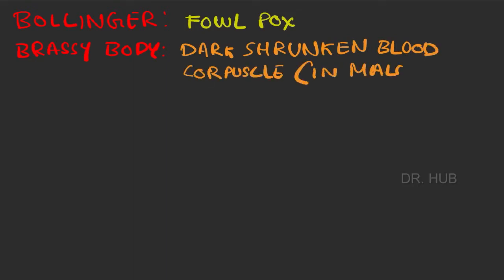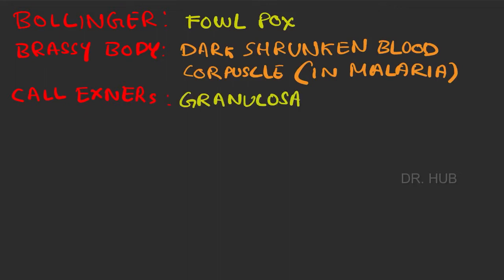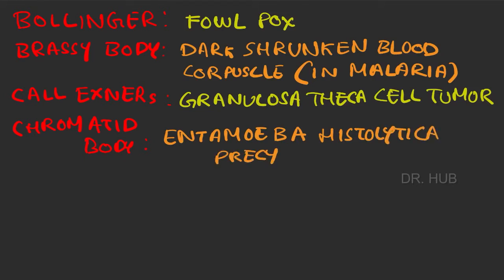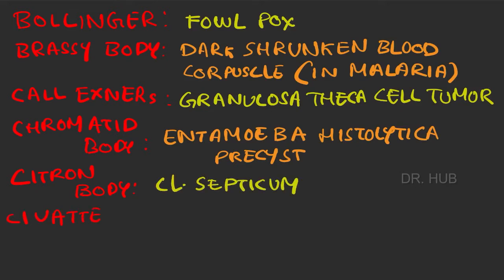Brazi bodies seen in dark shrunken blood corpuscles, seen in malaria. Then Call-Exner body seen in granulosa-theca cell tumor. Then chromatoid body seen in Entamoeba histolytica precyst. Then citron body seen in Clostridium septicum.